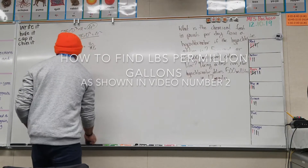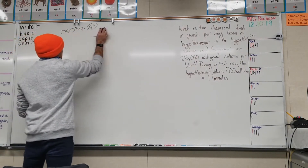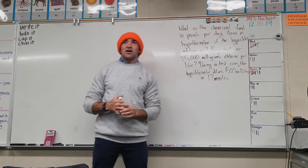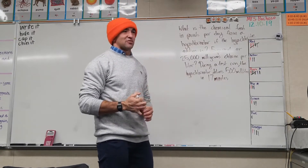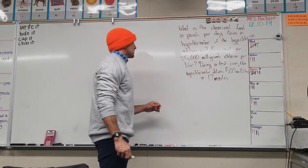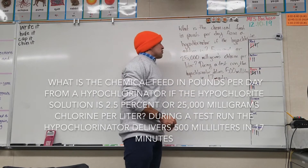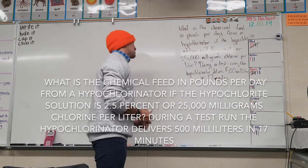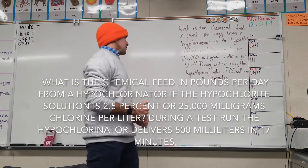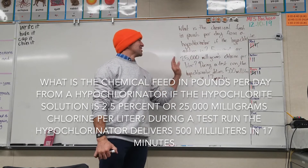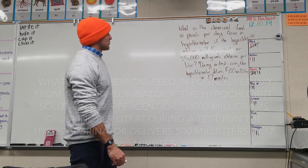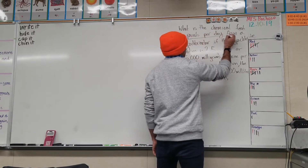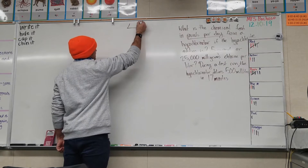Now we're adding another tool to the belt. The question is: what is the chemical feed in pounds per day from a hypochlorinator if the hypochlorite solution is 2.5 percent, or 25,000 milligrams of chlorine per liter? During a test run, the hypochlorinator delivers 500 milliliters in 17 minutes. What is the chemical feed in pounds per day?